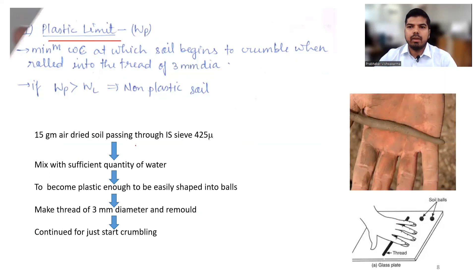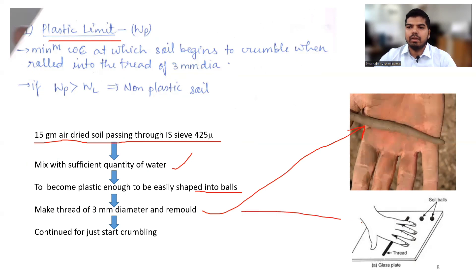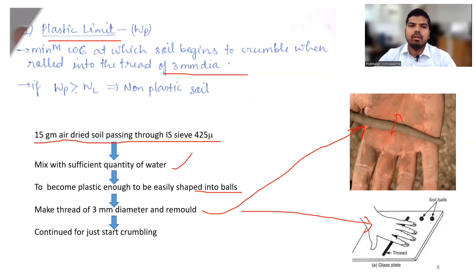Coming to the plastic limit: we take 15 grams of dry soil passing through an IS 425-micron sieve and mix it with sufficient water to become plastic enough to be easily swept into a ball. We then make a thread of 3 mm diameter by rolling it on a surface and continue until it just starts crumbling. The water content at the point of crumbling is the plastic limit — the minimum water content at which soil begins to crumble when rolled into a thread of 3 mm diameter. If the plastic limit WP is greater than the liquid limit WL, then the soil is non-plastic.